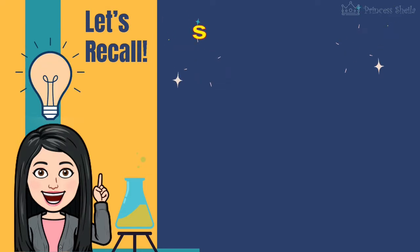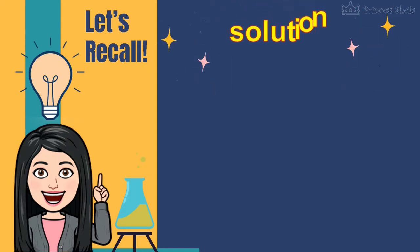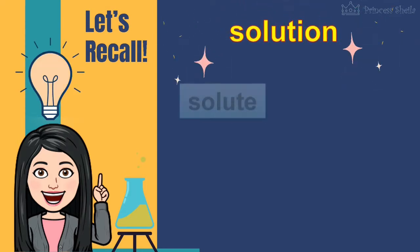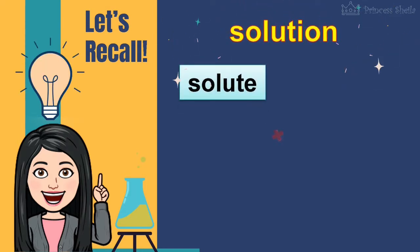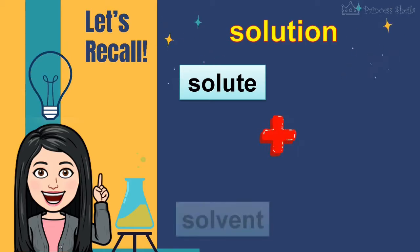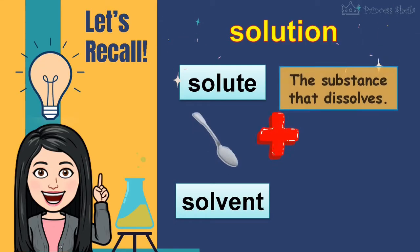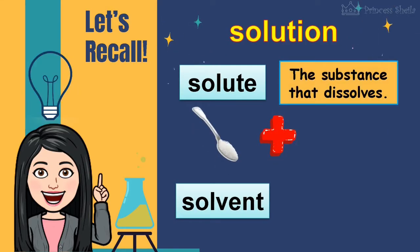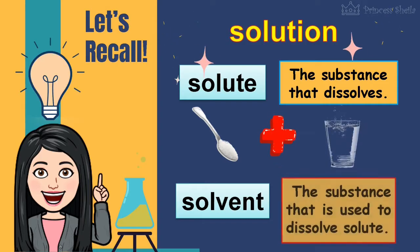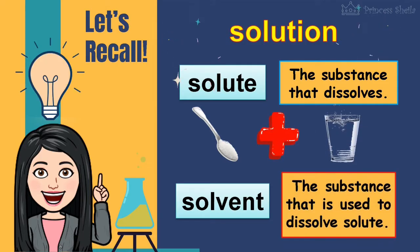In our previous lesson, we learned about solution. A solution is made up of solute and solvent. Solute is the substance that dissolves, while solvent is the substance that is used to dissolve the solute.